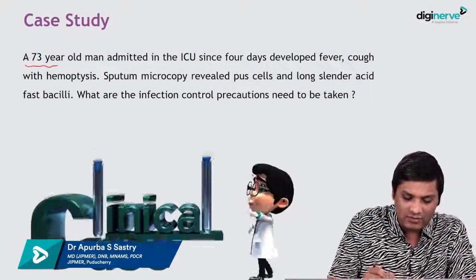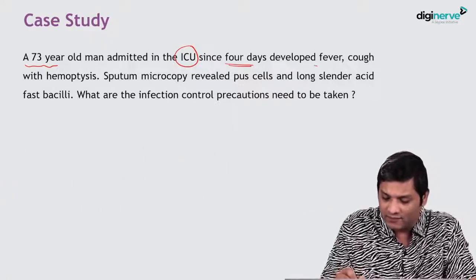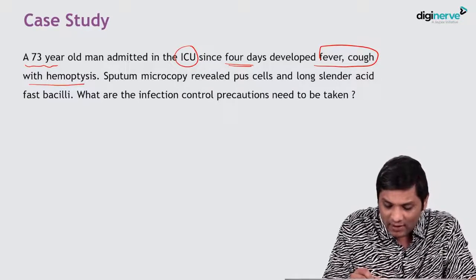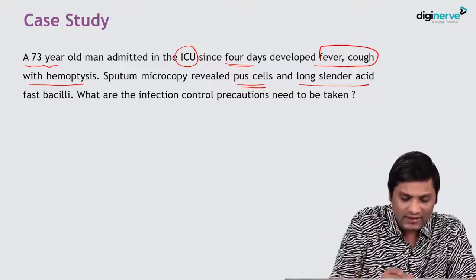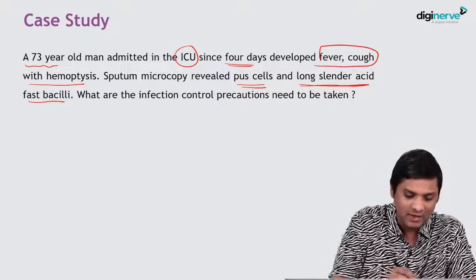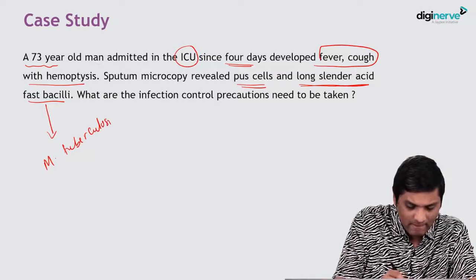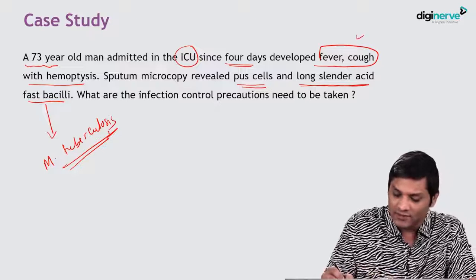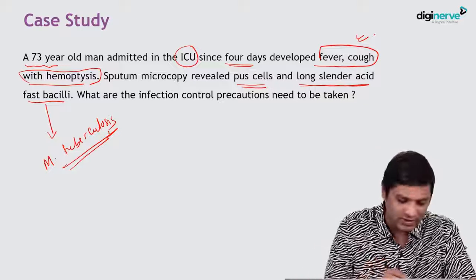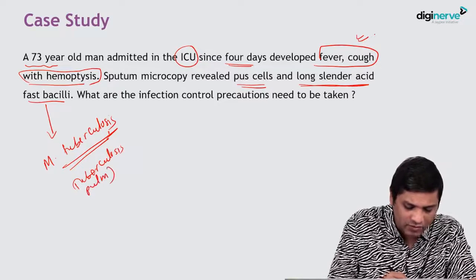It is a case of a 73-year-old man admitted to the ICU since 4 days. He has developed fever, cough and hemoptysis. Sputum microscopy has revealed pus cells and long slender acid-fast bacilli, pointing towards Mycobacterium tuberculosis. It is a case of fever and chronic cough with hemoptysis, so the clinical diagnosis here is tuberculosis — specifically, pulmonary type of tuberculosis.